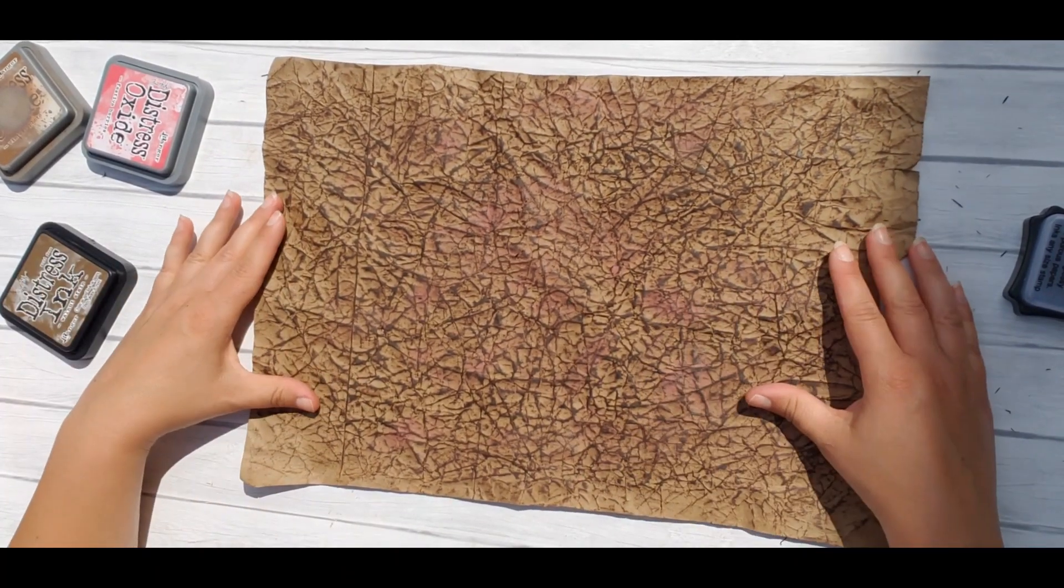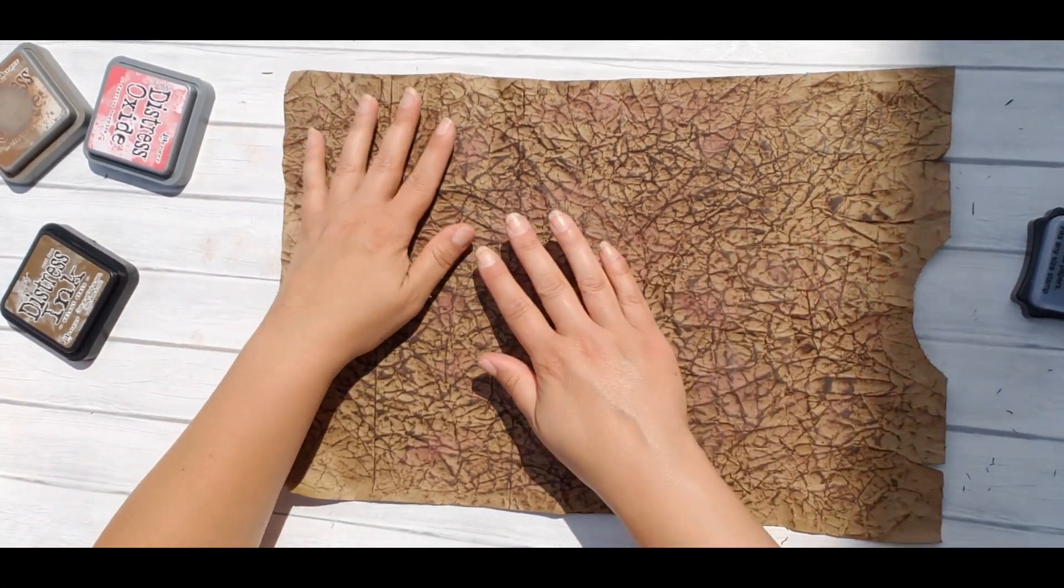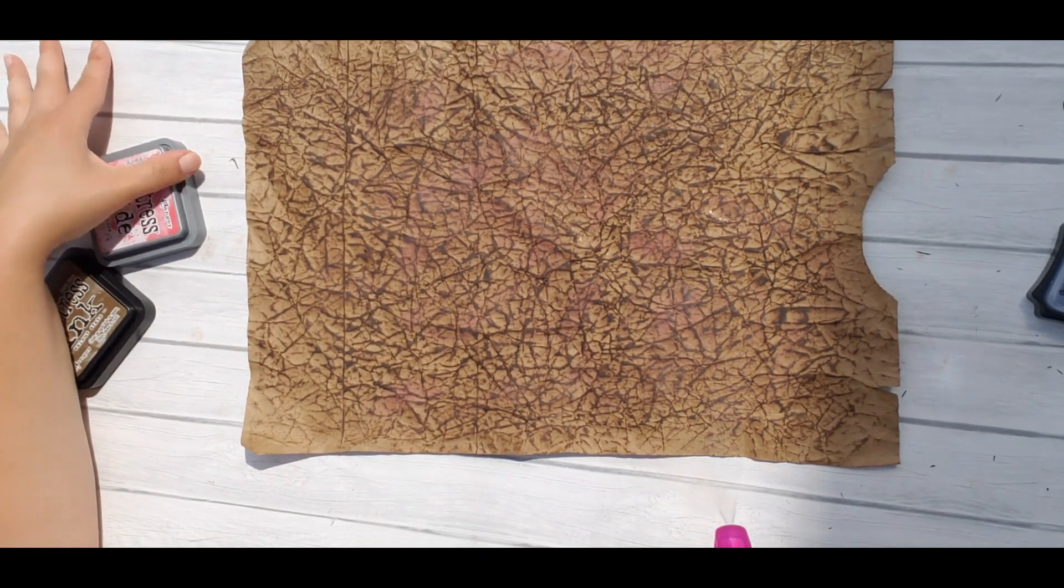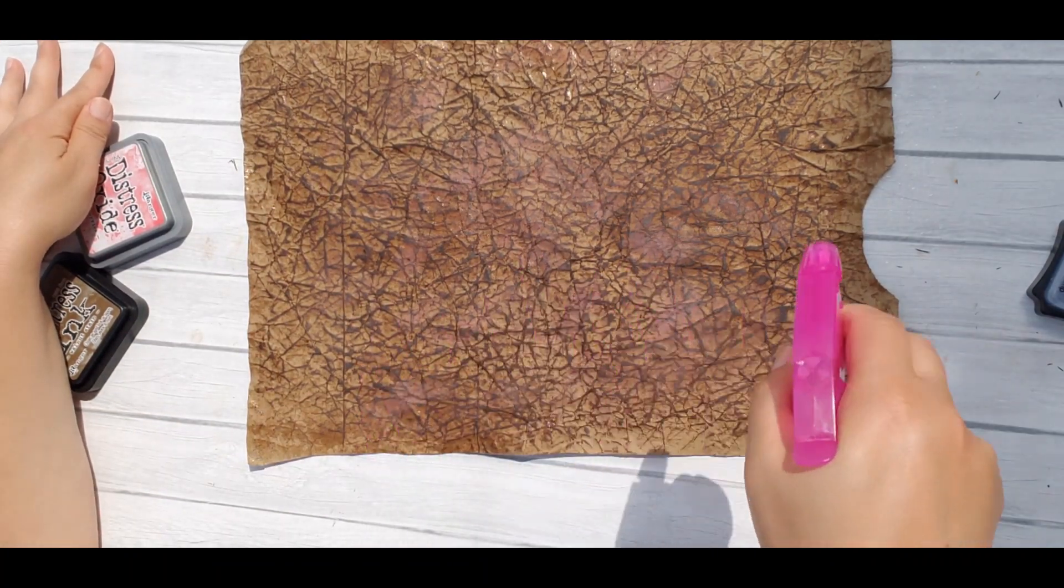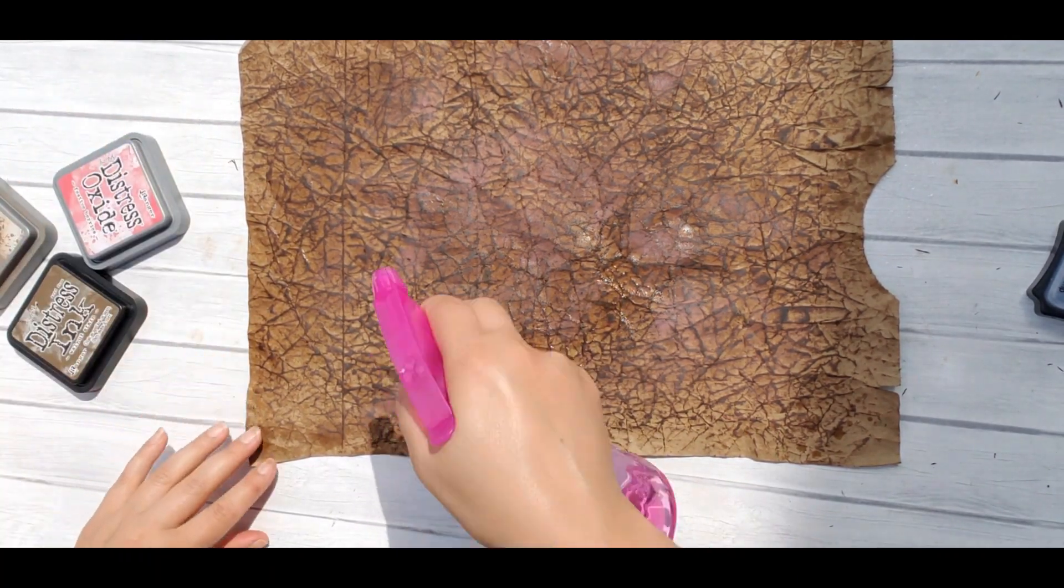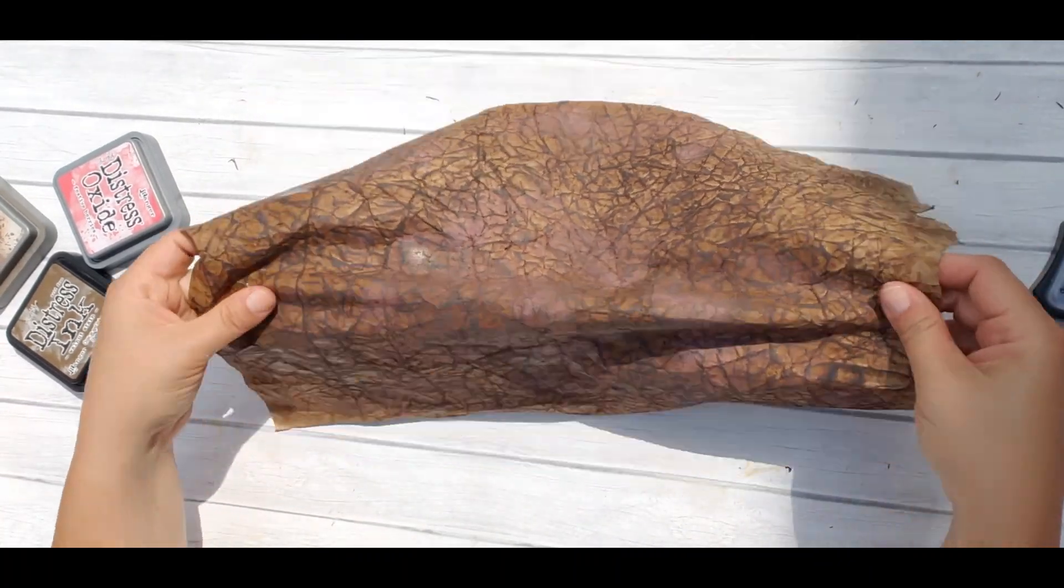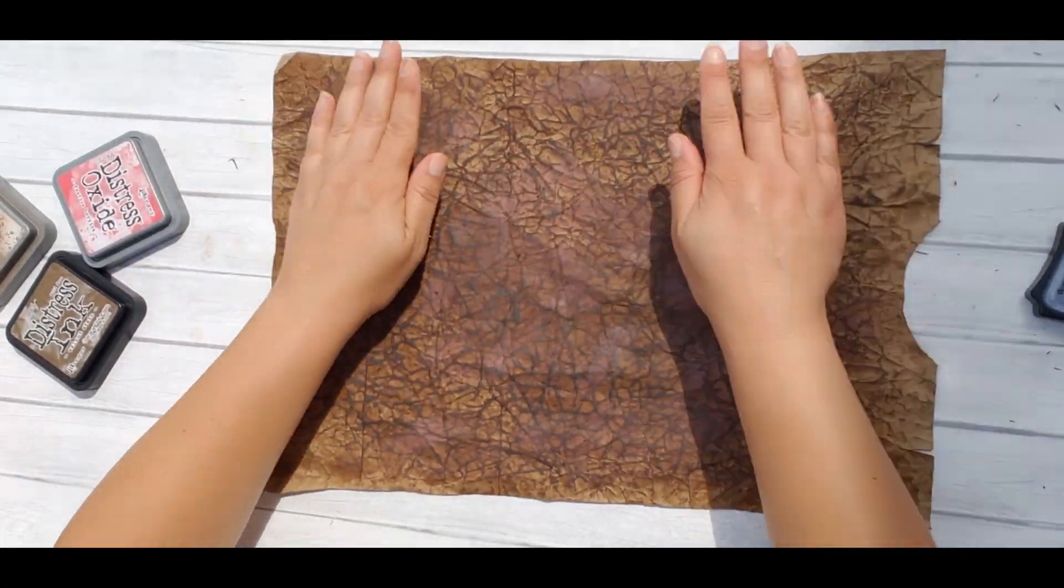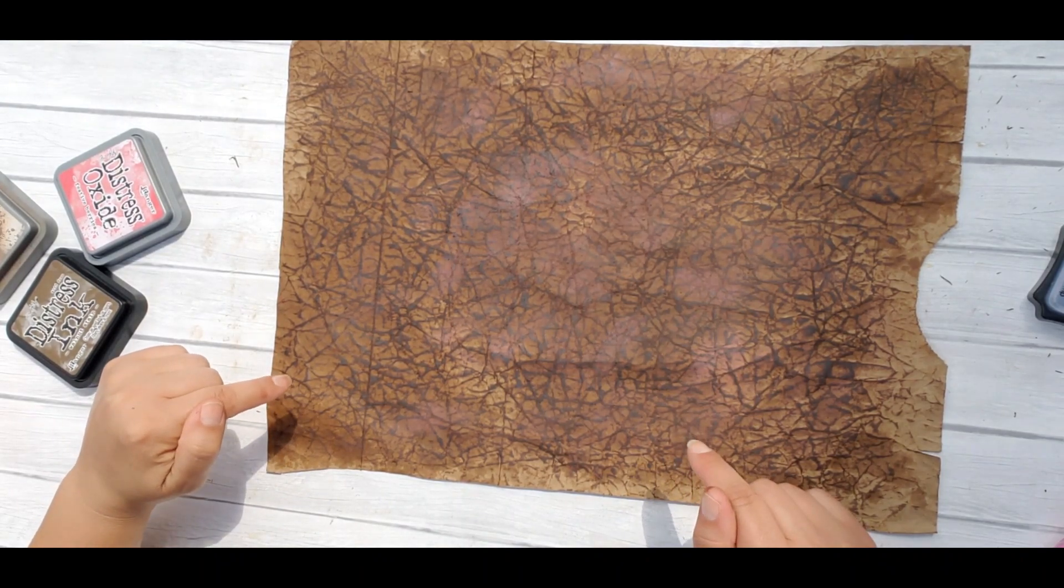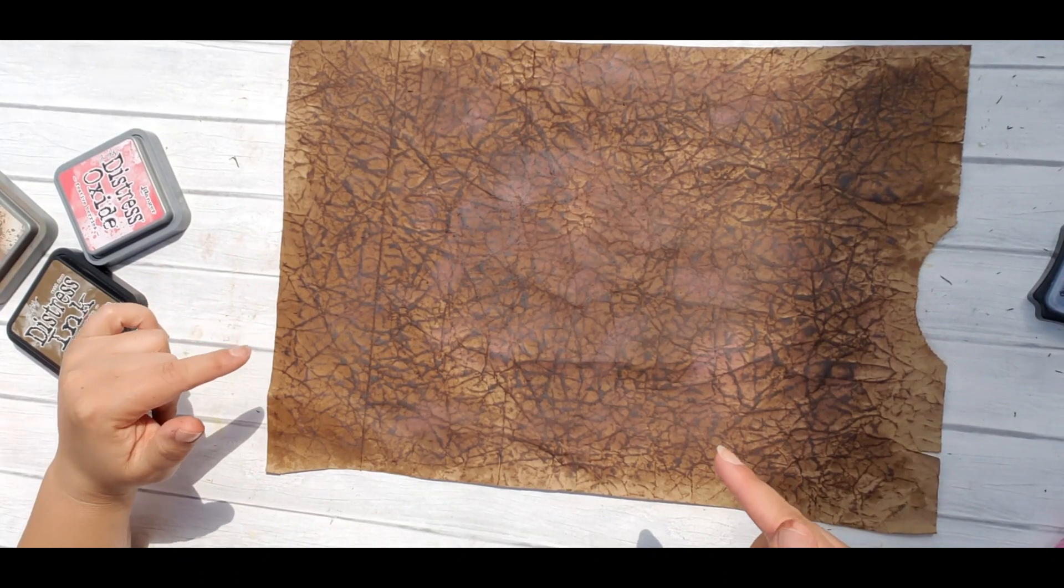Now the cool thing about Distress Oxides is that they move around when you splash them with water. I'm bringing in my water bottle and I'm going to spritz it lightly. I can see my colors are moving around already. And I like that. There. Next I'm going to allow this to air dry. We can go grab a cup of coffee or lunch and we'll be back in just a few minutes.